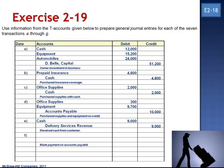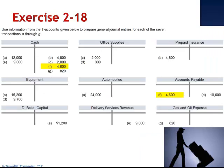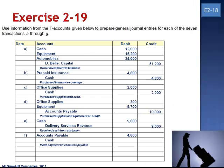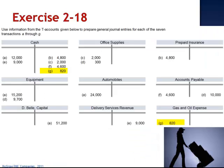In Letter F, we made payment on accounts payable. We see the debit to accounts payable $4,600 and a credit to cash — debit accounts payable and credit cash. And finally, in Letter G, we paid for gas and oil, debiting gas and oil expense $8,200 and crediting cash.